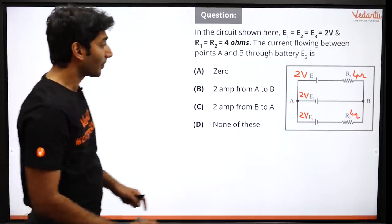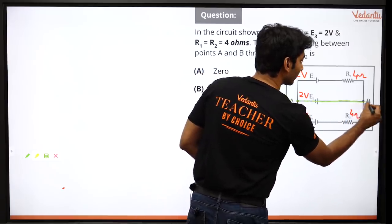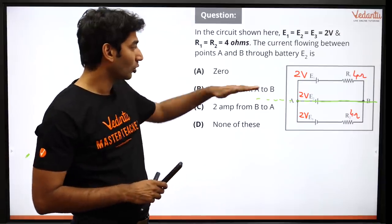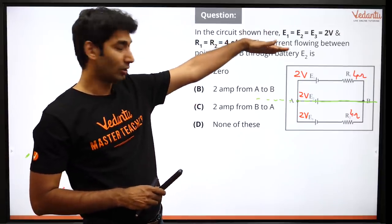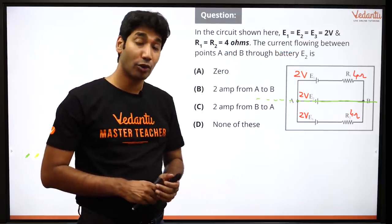So if I draw an imaginary line, if I draw a line, an imaginary line, the upper part is the same, the upper part is the same and the lower part is the same.